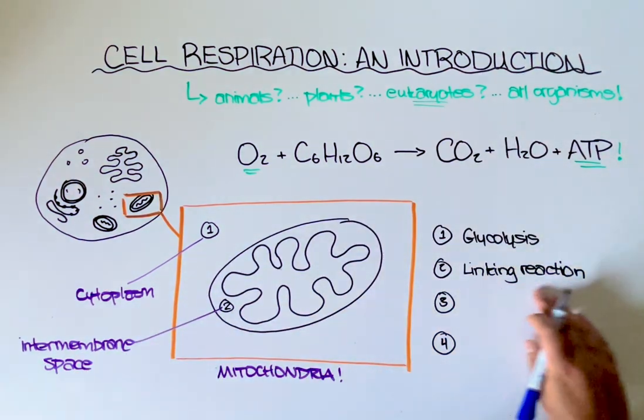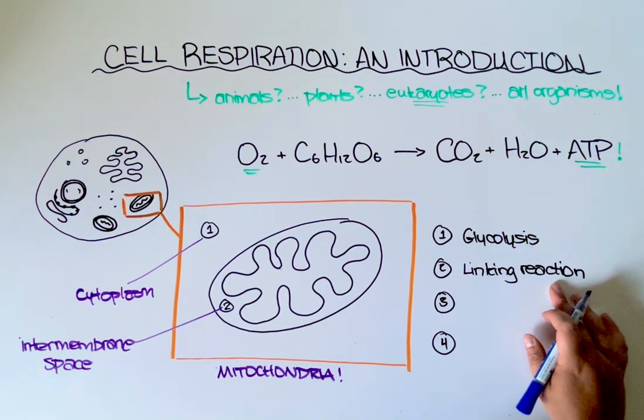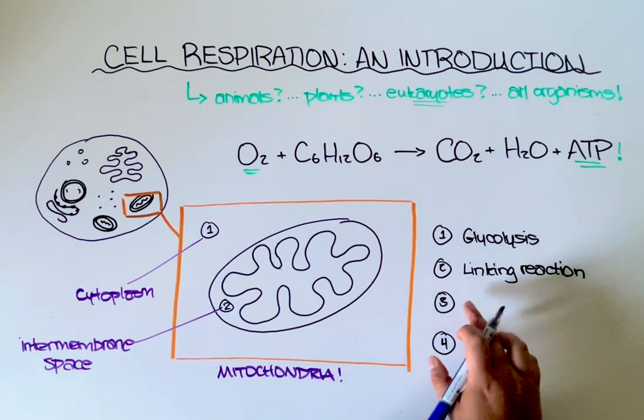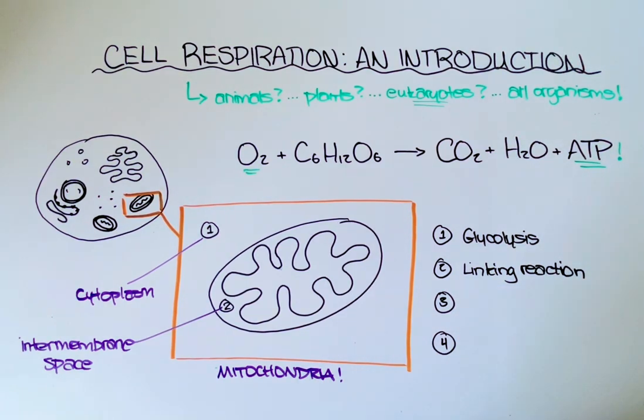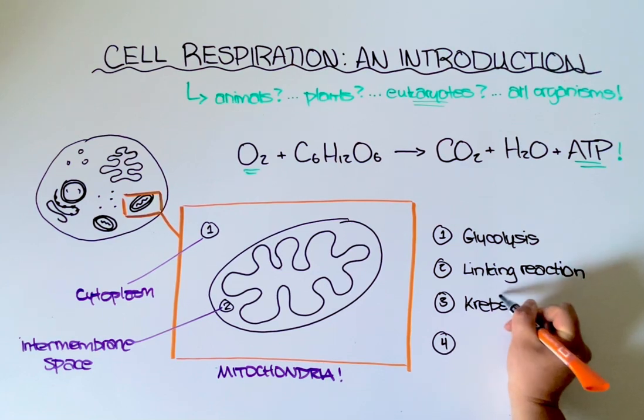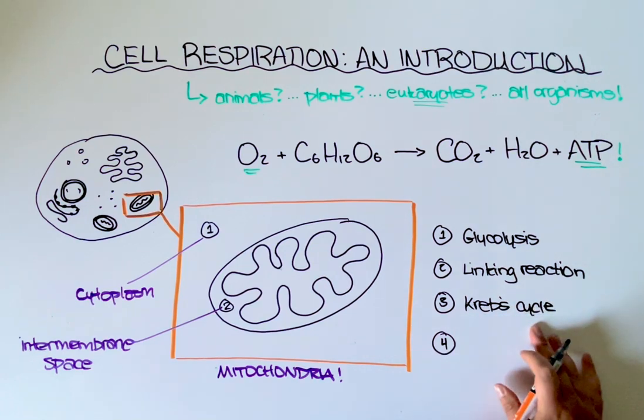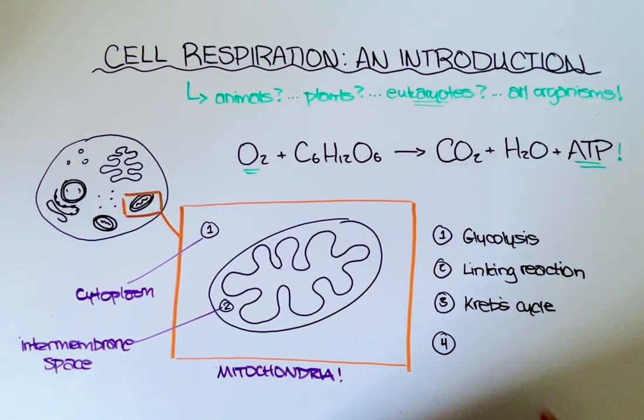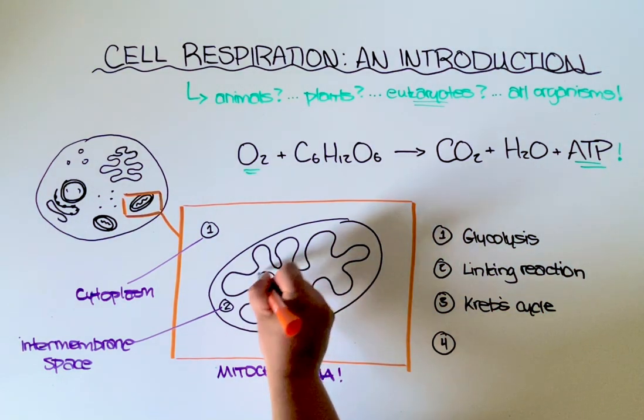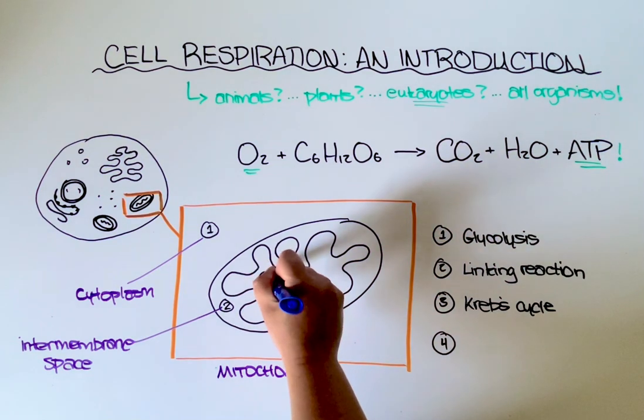So once that linking reaction has modified the pyruvate to create a molecule called acetyl coenzyme A, then that molecule can be used to fuel the third step in aerobic cell respiration, which is called the Krebs cycle. Now the Krebs cycle is extremely complex. You can take a whole university course essentially on the Krebs cycle. For now,